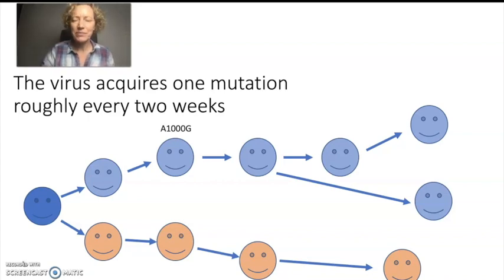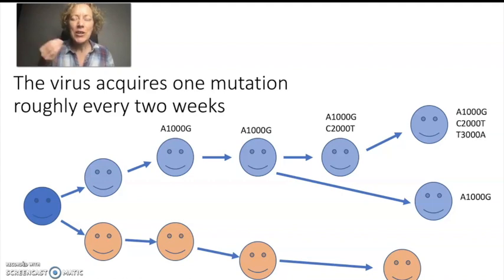So I'm going to add to this transmission chain a mutation that I made up, A1000G. But now if this person is infected with a virus that has a mutation, if they transmit the virus to the next person, they will also be infected with the virus with that mutation, and so on. So the orange transmission chain may also acquire some mutations. I'm going to add some mutations here as well.